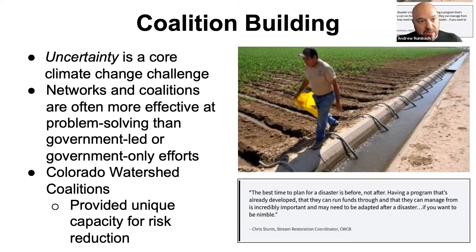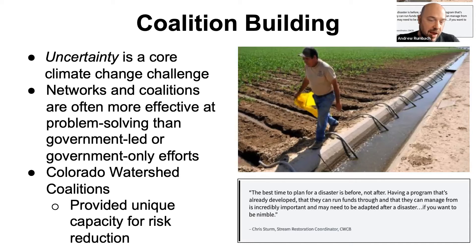These kinds of what we call networked resilience — building these coalitions — not only are they important, but they can also be funded through mitigation grant dollars, and they can also be highly effective at addressing uncertain climate risk.